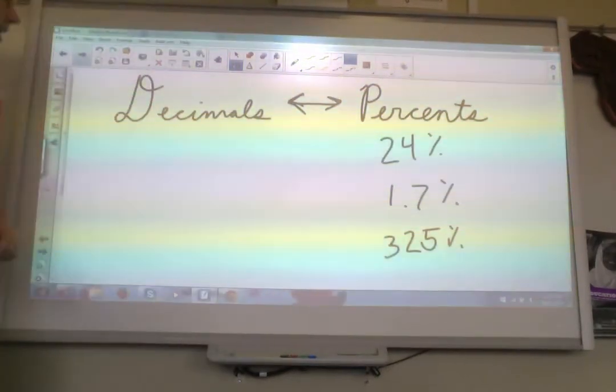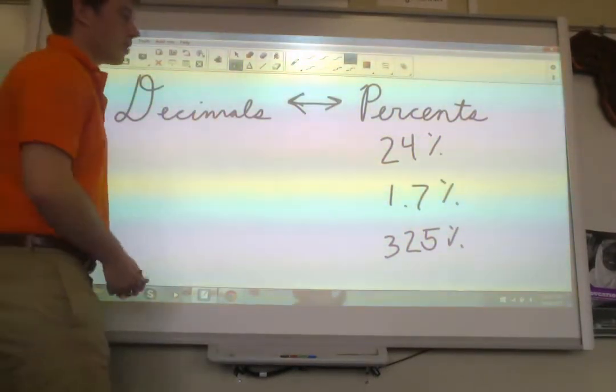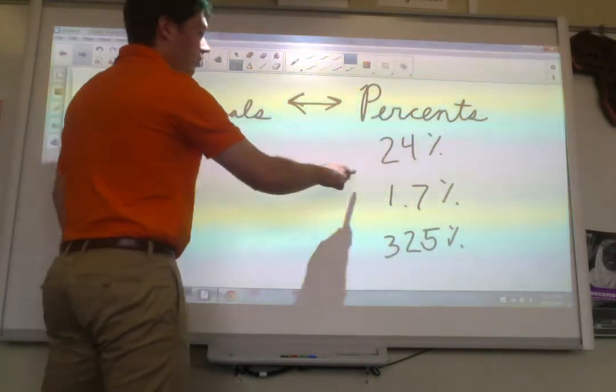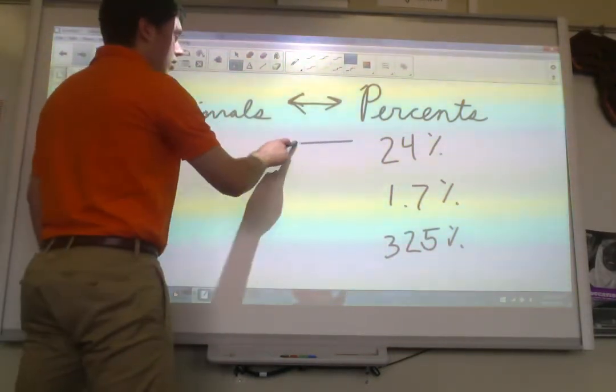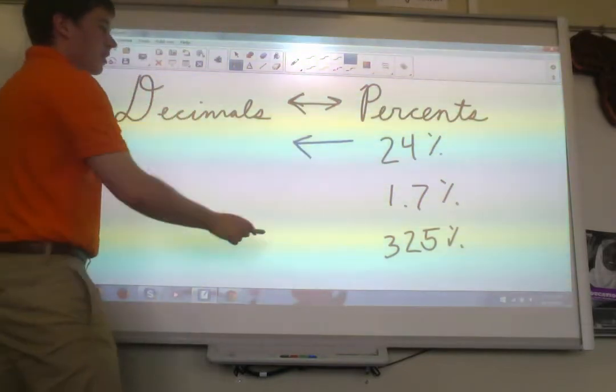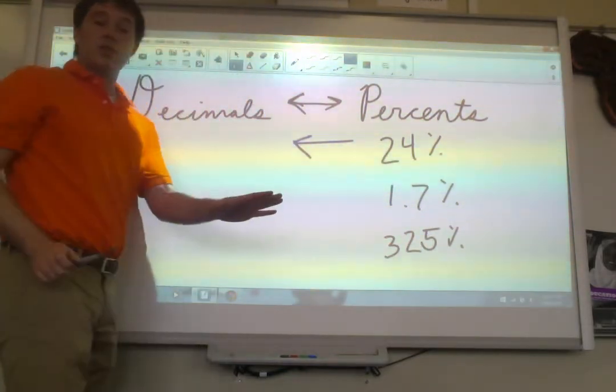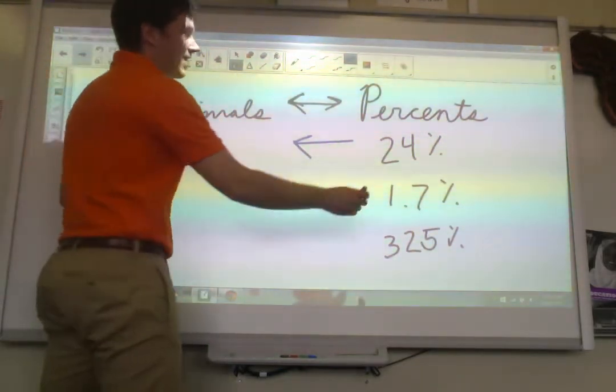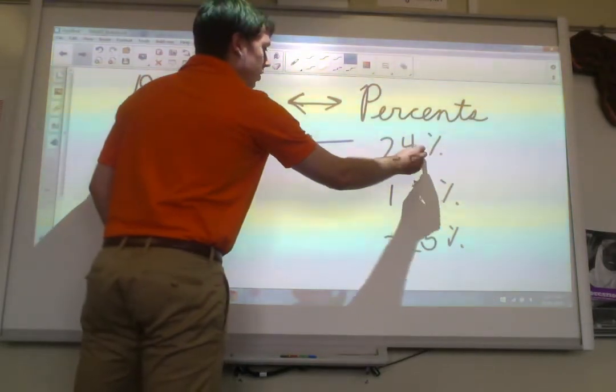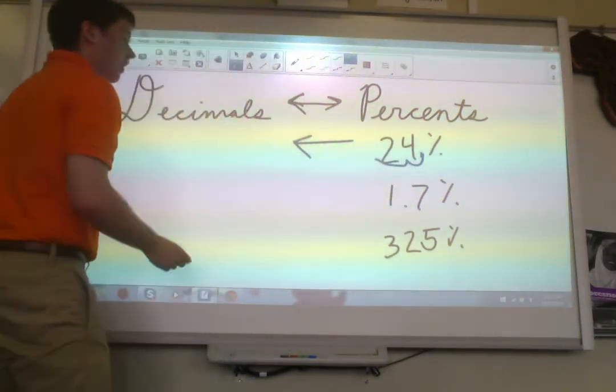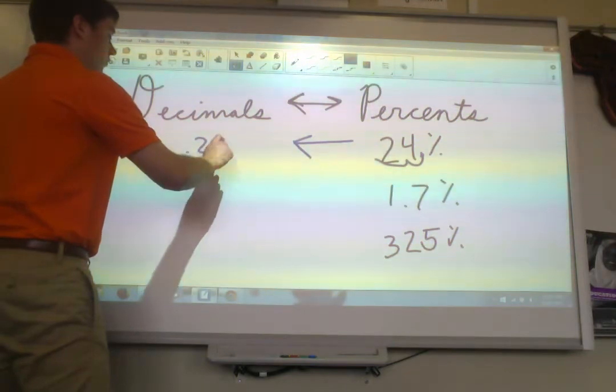The flip side of that, then, converting percents back to decimals, it's just the opposite. You're going to start with the decimal here, move it two places to the left. Alright, so 24% becomes, remember, if there is no decimal, the decimal is at the end of the number. So move it twice, and you get 0.24.